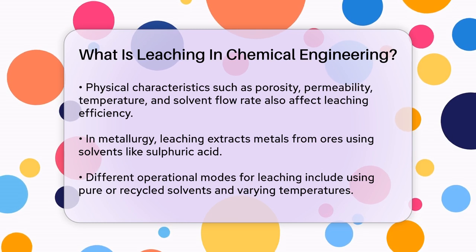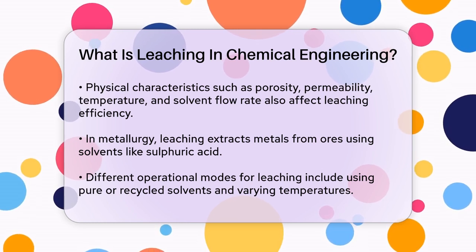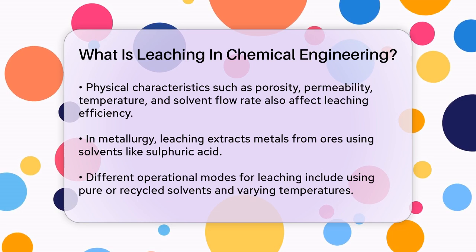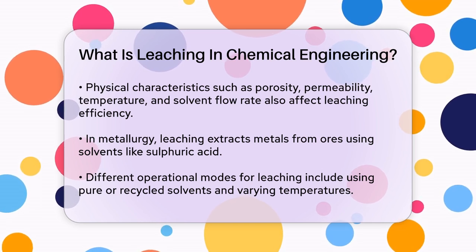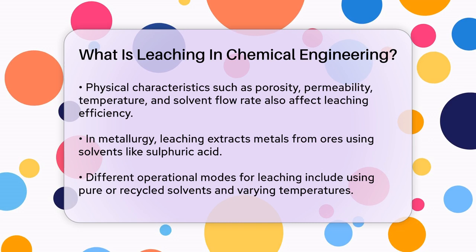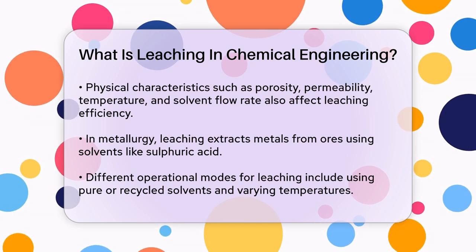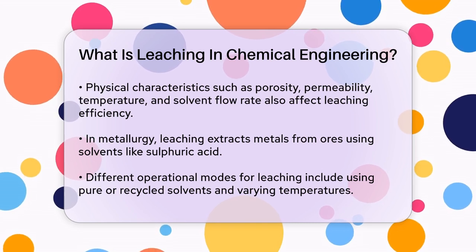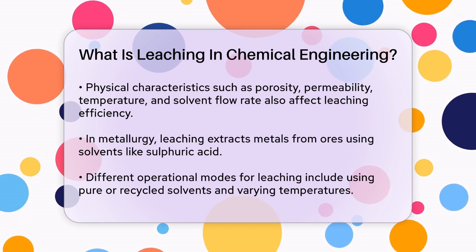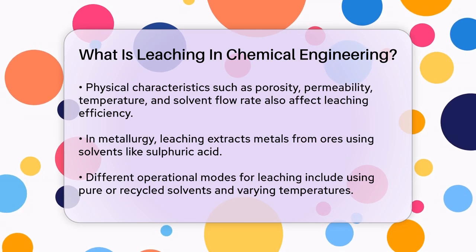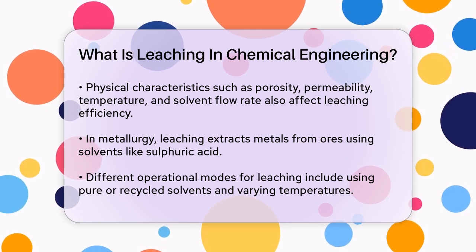For instance, in metallurgical industries, leaching is used to extract valuable metals from ores. Sulfuric acid might be used as a solvent to dissolve metals like copper or gold from the ore. The process can be carried out in different operational modes, such as using pure solvent, recycled solvent, or even at elevated temperatures to enhance the extraction rate.